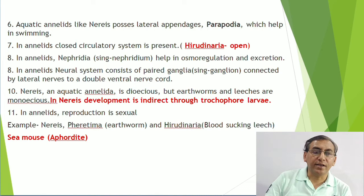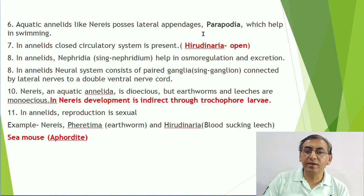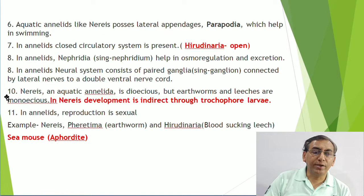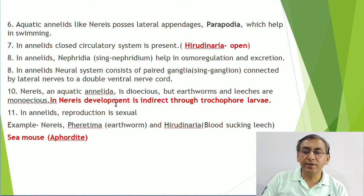An important example of Annelida is Nereis, also known as the rag worm, clam worm, or sand worm. Nereis has lateral appendages called parapodia, which help in swimming. Nereis is aquatic and dioecious - this is very important, as earthworm and leech are monoecious. Development in Nereis is indirect, taking place through a larva known as the trochophore larva.